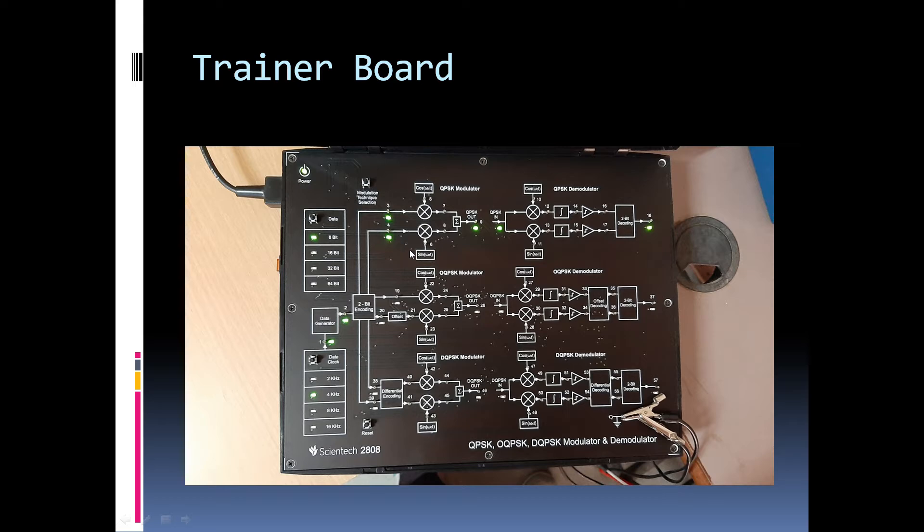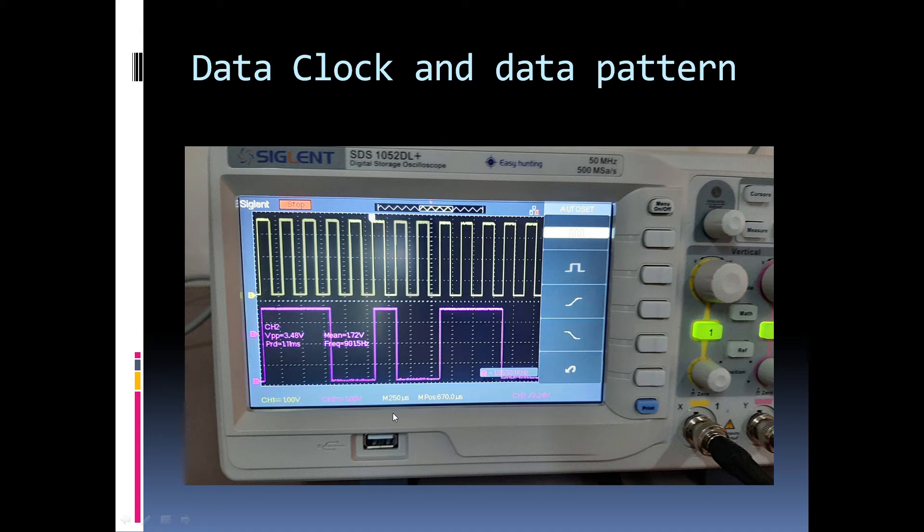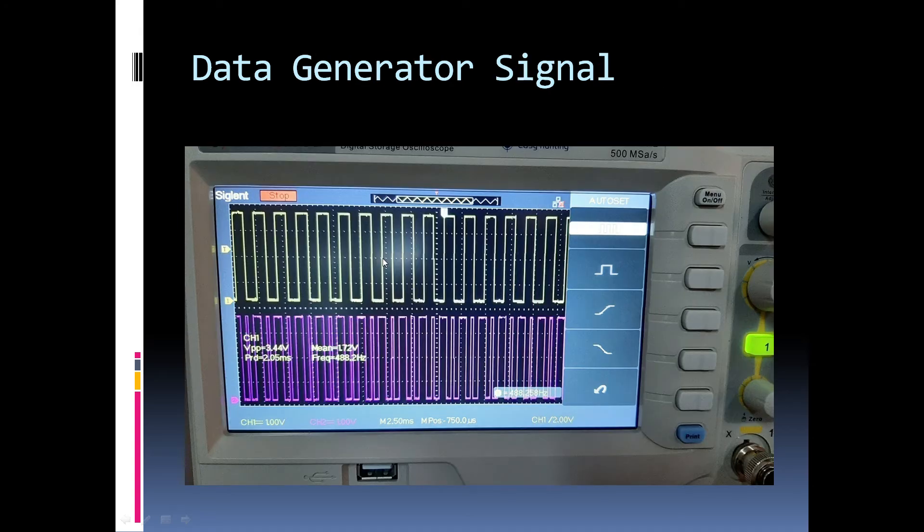Now, we will learn the operation of QPSK modulation through waveforms at various outputs of the various blocks. As we see here, data signal in channel 2 has a fixed bit pattern of 3, 2, 1, 2 that I will explain in a while. For comparison purpose, I have also put data clock signal on channel 1. Now, here I have put output of data generator block on channel 1 and data block on channel 2 for comparison.